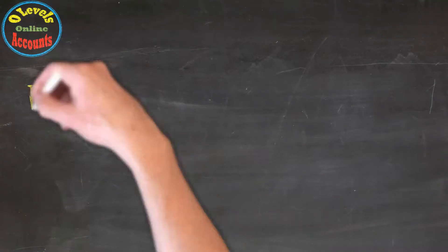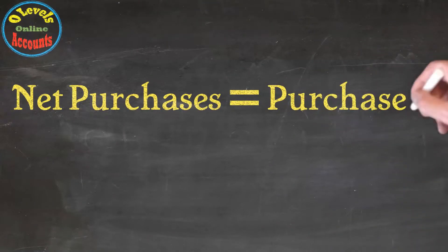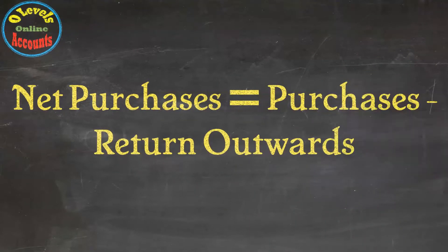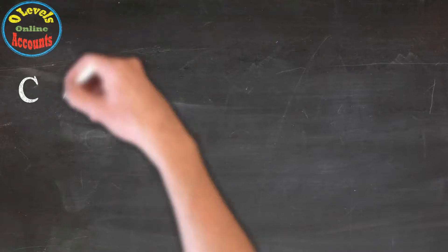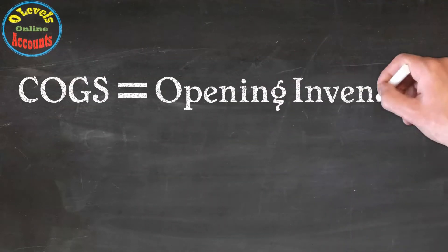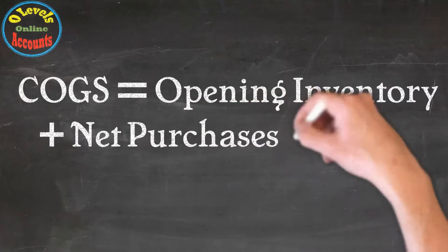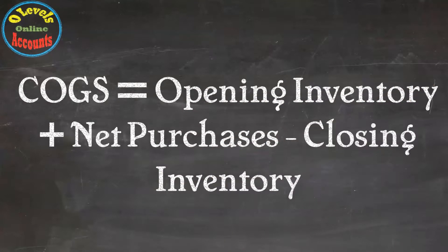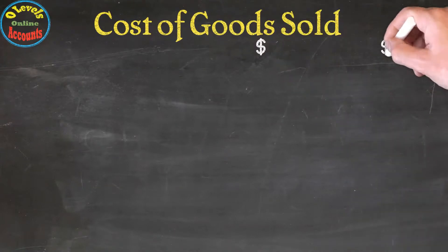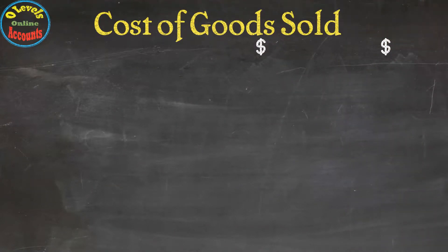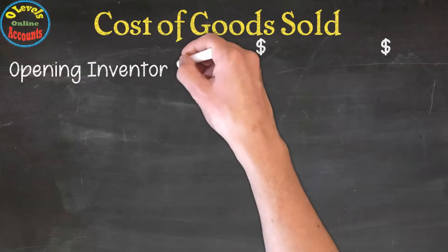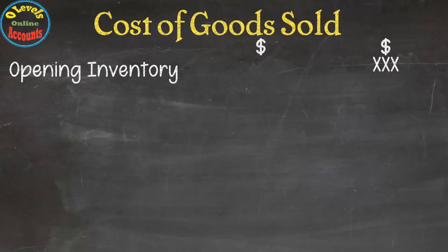Net purchases is used in the cost of goods sold working. The formula is: net purchases equals purchases minus return outwards. The general formula for cost of goods sold is: opening inventory plus net purchases minus closing inventory. Let's see it in detail. Here we created two columns to distinguish our working. In accounting, final results should be placed in the second column.